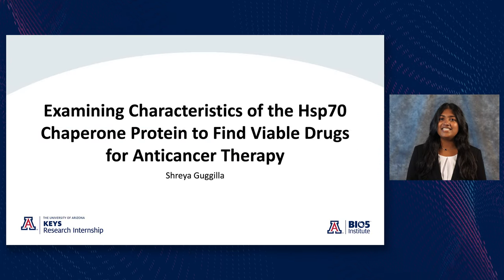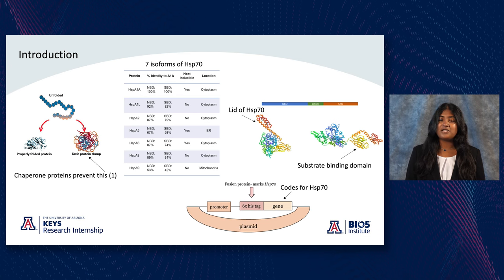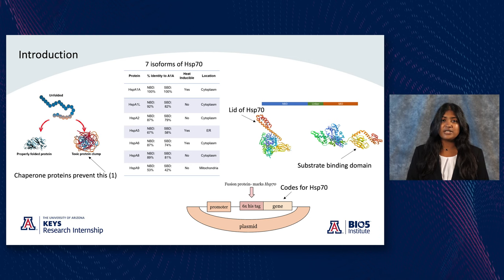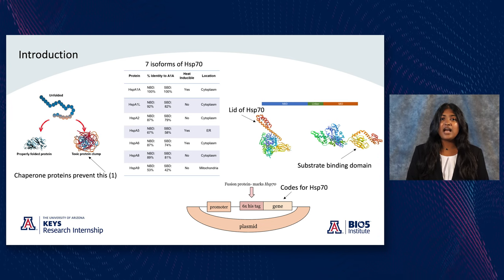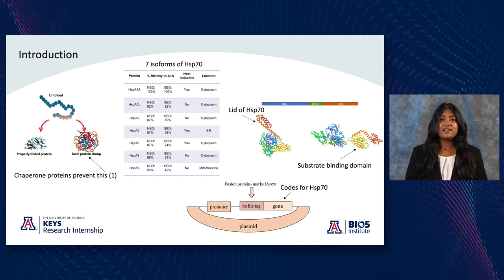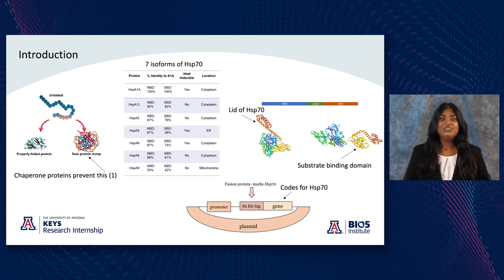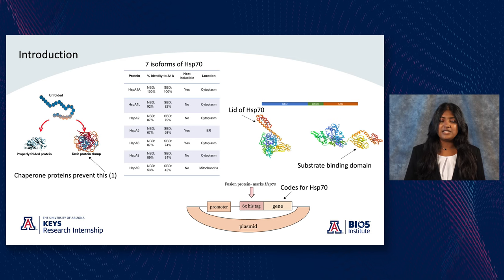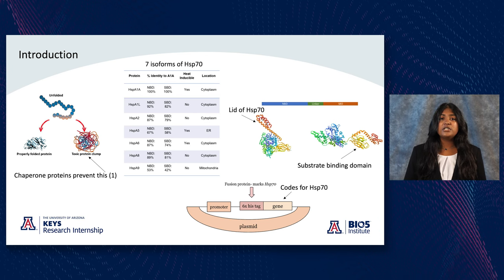Hi, my name is Shreya Gugila and this summer I worked in the Chapman lab, looking at chaperone proteins — proteins that aid in proper protein folding and prevent protein aggregation, which could be toxic to cells. Chaperone proteins are vital to cell survival, but cancer cells can also exploit them to their own advantage. I looked at a specific group known as HSP70s, examining their characteristics with the goal of finding an inhibitor for HSP70s in cancer cells as a viable anti-cancer therapy strategy.